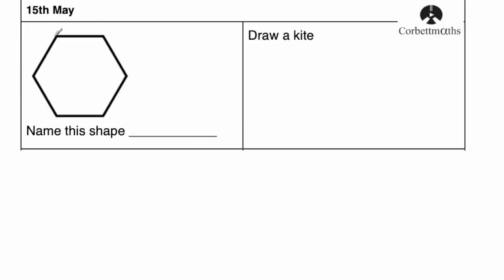Our first question says name this shape. So it's got one, two, three, four, five, six — the shape's got six sides, so this means it's going to be a hexagon.